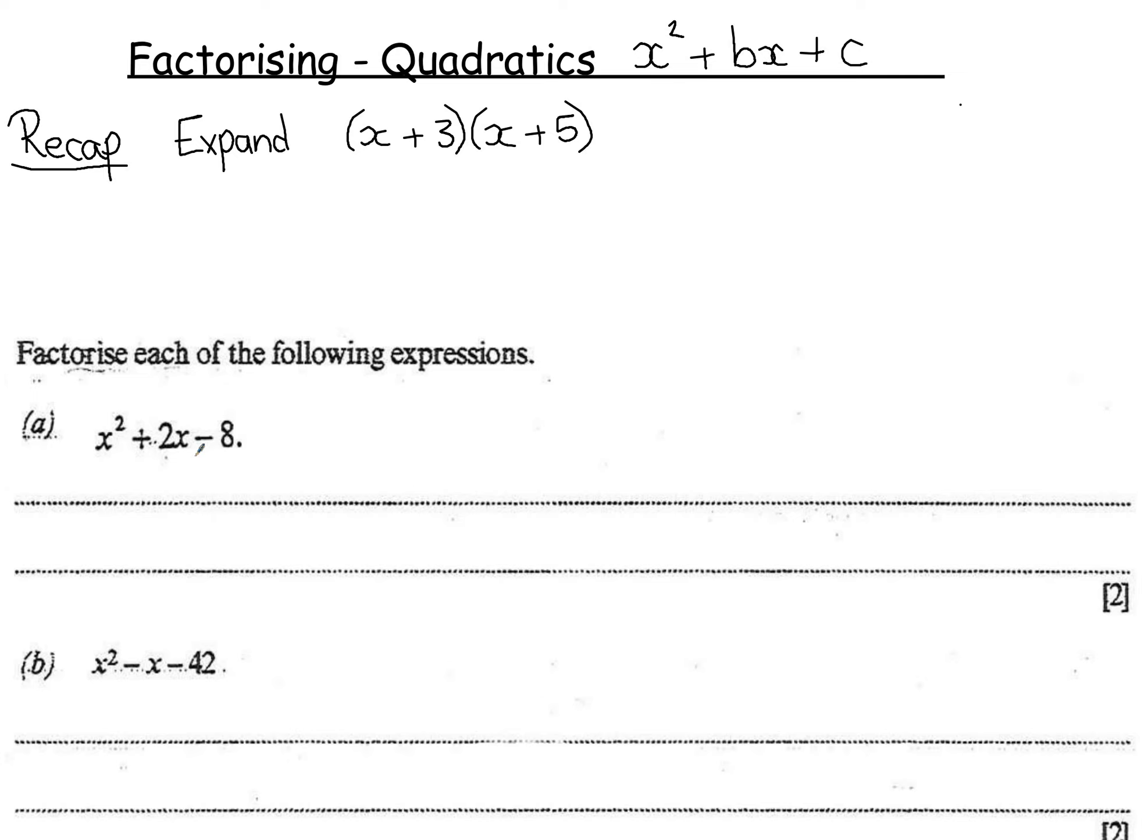So we are factorising simple quadratics where the coefficient of x² is 1. First of all, let's have a little recap whereby we expand brackets. Now we already know from factorising using common factors that factorising is the opposite of expanding.